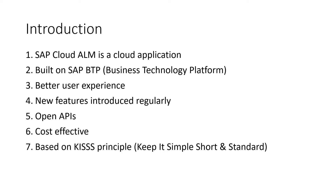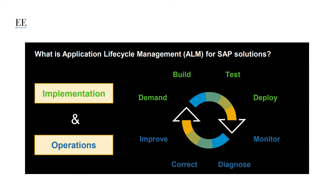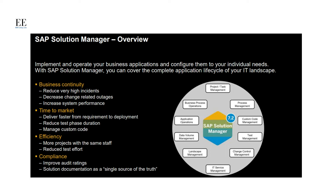Before we get into the details about Cloud ALM, let's take a quick look at what Application Lifecycle Management is. ALM software consists of tools and processes that help to manage the lifecycle of a software product from product design up until the end of its life. The lifecycle consists of different phases like requirements gathering, building, testing, deploying, and operating.